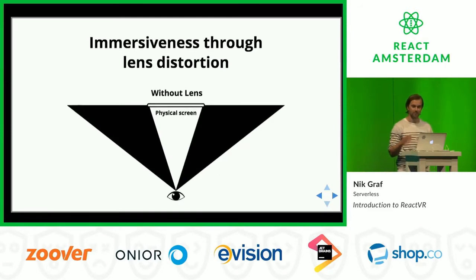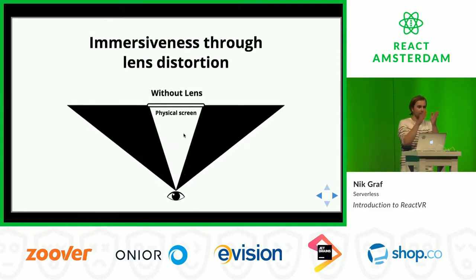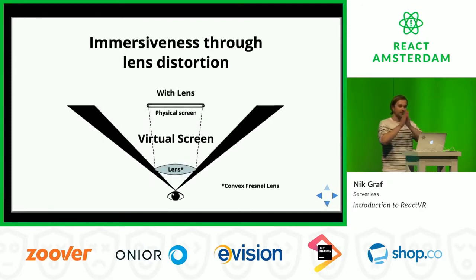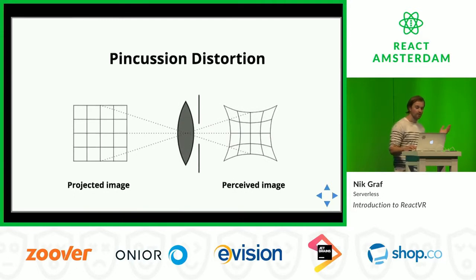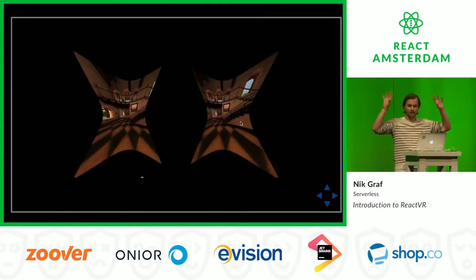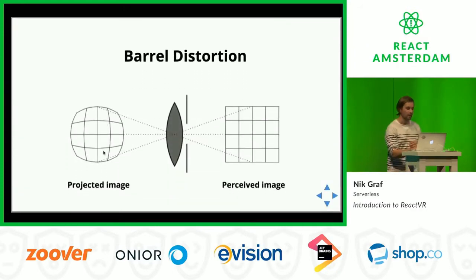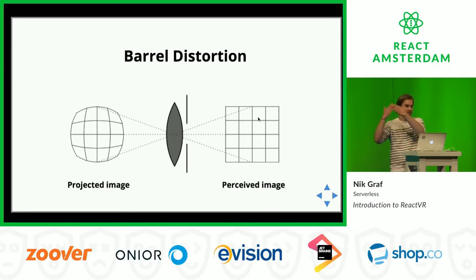How does this work? Usually if I just take a phone and hold it in front of my face, that's not a very immersive experience because the physical screen only covers a little bit of your field of view. But if you take lenses, you can expand that screen. What's happening with these goggles is they widen your field of view through a lens. And if you take a projected image, run it through the lens, the lens distorts it, so we pre-distort the image in reverse — and the outcome is a stable perceived image. That's the magic about how VR technology works.